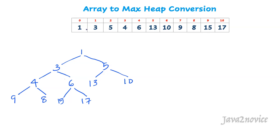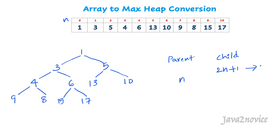Let's understand how to identify parent and child node positions in the array before heapifying. We will derive formulas based on the array index position. Let's assume n represents the array index. If the element at index n is a parent, then 2n+1 represents the left child, and 2n+2 represents the right child.